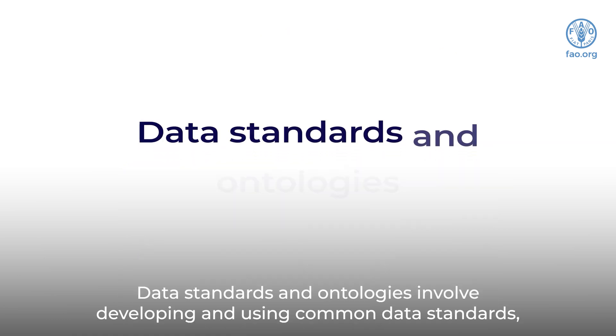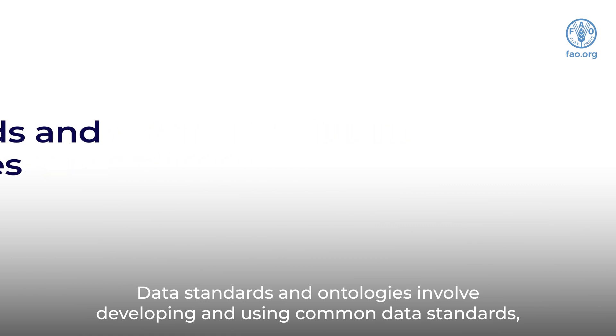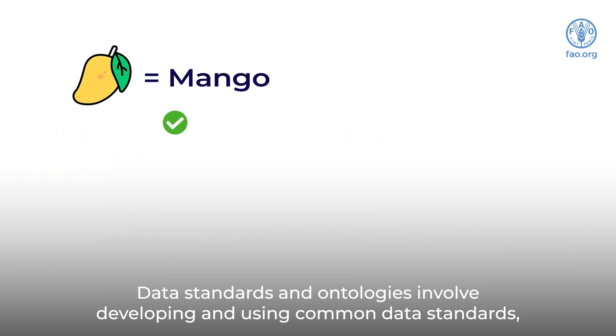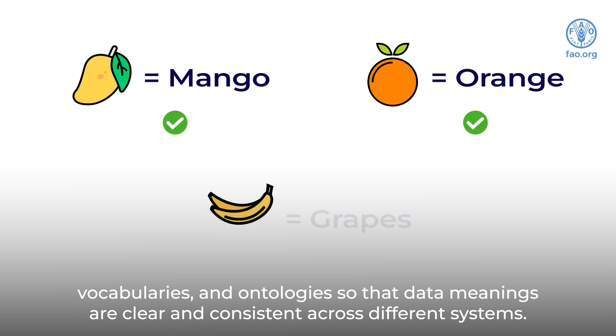Data standards and ontologies involve developing and using common data standards, vocabularies, and ontologies so that data meanings are clear and consistent across different systems.